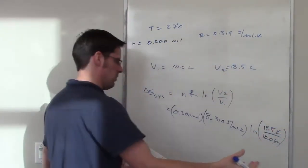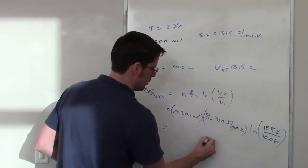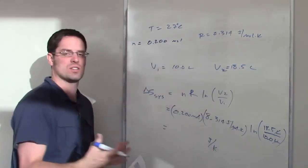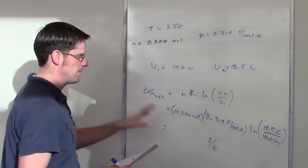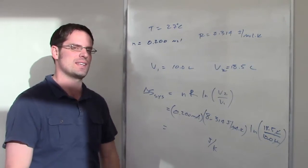Liters cancel each other out unit wise, moles cancel each other out, and you'll end up getting an answer joules per Kelvin which are the units of delta S for change in entropy. You throw all that into your calculator, you should end up getting the correct answer.